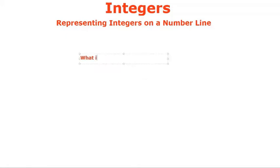So let's start. What is the best way to represent integers? It is the number line, or you can even call it the number ray.